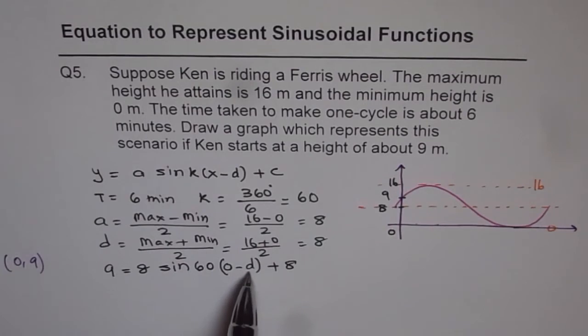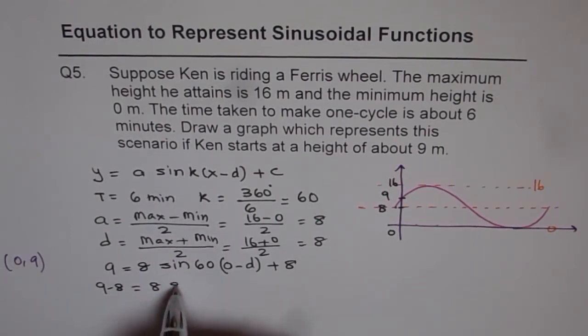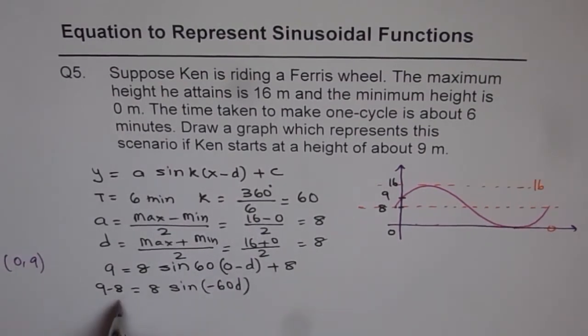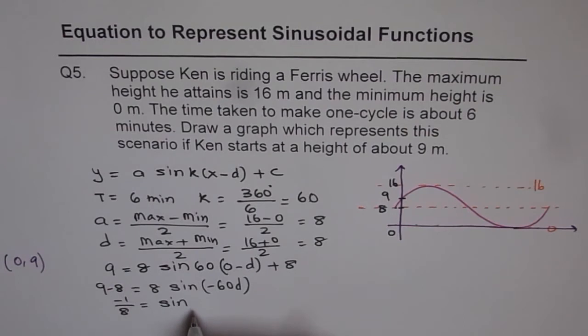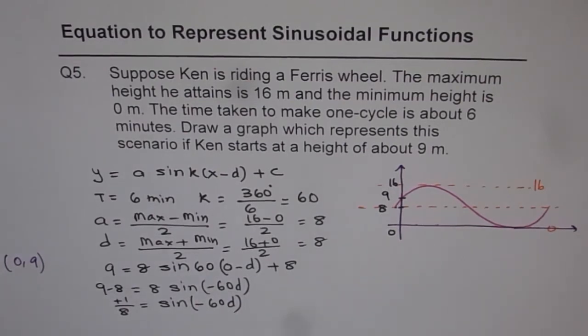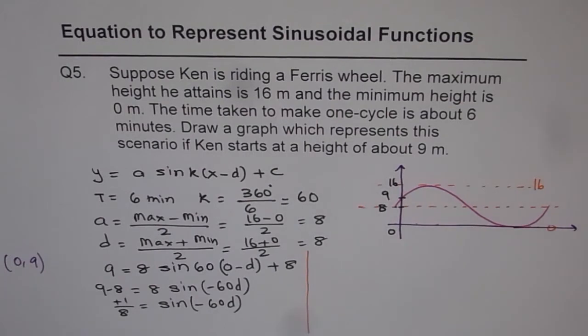So 9 minus 8, we can write 9 minus 8 equals a times sine of minus 60d. That gives us 1 over 8 equals sine of minus 60d. We will keep minus 60d in the brackets. So we will take this part on the right side and solve it further.